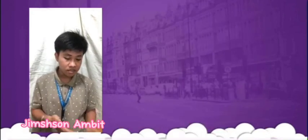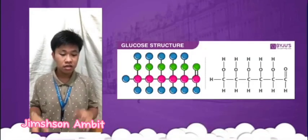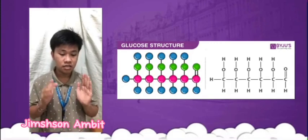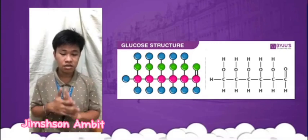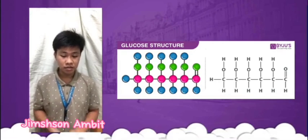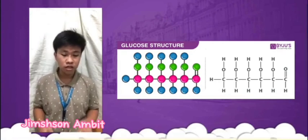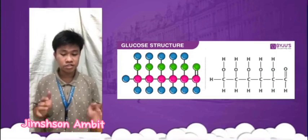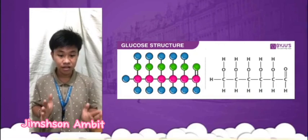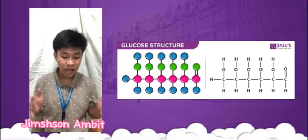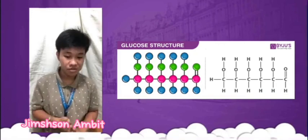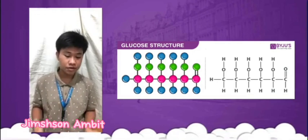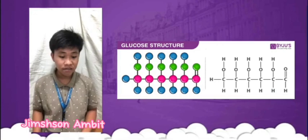The next image shows the molecular formula C6H12O6. This image shows the actual number of atoms of each element in glucose. The carbon atoms are represented by the black circles, the hydrogen atoms by the white circles, and the oxygen atoms by the red circles. And here we have the glucose structure.